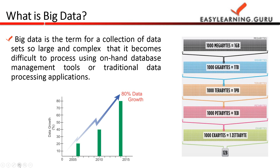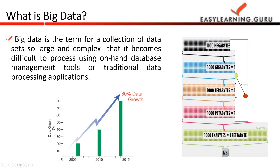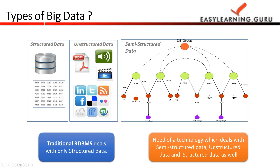So what is big data? Big data is the term for a collection of data sets which is so large and complex that it becomes very difficult to process using on-hand database management tools like RDBMS or traditional data processing applications. As you can see in the growth chart, data grows from 0 to 80 percent by 2014. The size of data ranges from MBs, GBs, terabytes, all the way to zettabytes and exabytes — that is what falls under the category of big data.